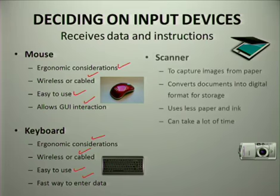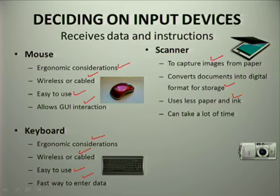The next device is a scanner. Scanners capture images from paper and convert your documents into digital format for storage. They use less paper as well as less ink. However, they can take up a lot of time, which is one of the disadvantages, because when you scan an image it doesn't happen quickly. A keyboard is much faster for entering data.